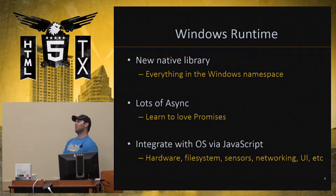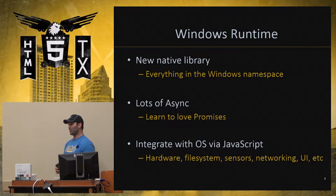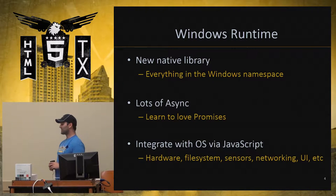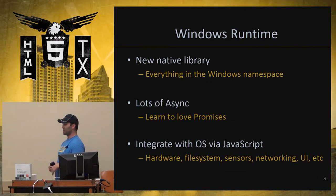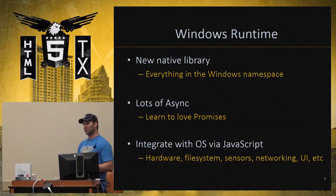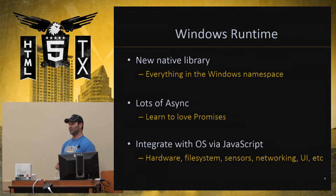They also call it WinRT, so if you've heard that term floating around, WinRT is this Windows Runtime API. Almost every method that does something significant that could potentially take — they've said 50 milliseconds — is only exposed as an async method. This is very similar to Node.js in that respect, although it uses a different style than Node.js.